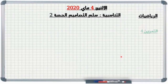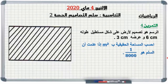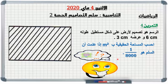التمرين الرابع والأخير: الرسم هو تصميم لأرض على شكل مستطيل طوله ستة سنتيمتر وعرضه ثلاثة سنتيمتر على التصميم. السؤال: احسب المساحة الحقيقية بالمتر المربع إذا علمت أن السلم هو واحد على ثمانية آلاف. سأترك لكم الوقت للبحث وإيجاد الجواب.